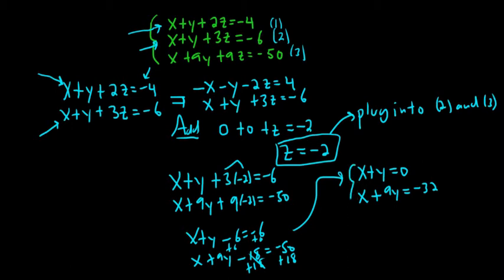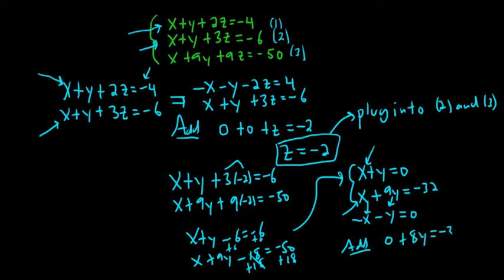The question again becomes, what can we multiply this by so that when you add it to this, the x's go away? Negative 1. So if you multiply that equation by negative 1, you get negative x minus y equals zero. Adding the two equations: the x terms give zero, the y terms give 8y, and the constants give negative 32. So 8y equals negative 32. Divide by 8 — we get y equals negative 4.